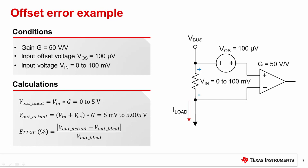To calculate VOUT ideal, the ideal output voltage of the amplifier with no errors whatsoever, we simply multiply the input voltage by the gain. This results in a range from 0 volts to 5 volts. To calculate VOUT actual, the actual output voltage, we must add the input offset voltage to the input voltage before multiplying by the gain. This results in a range of 5 millivolts to 5.005 volts. To calculate the percent error, the absolute value of VOUT actual minus VOUT ideal is divided by VOUT ideal.